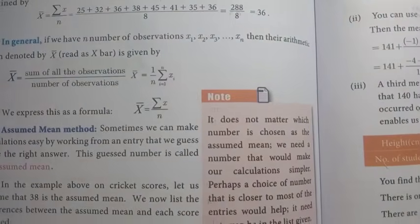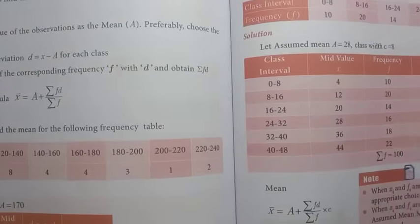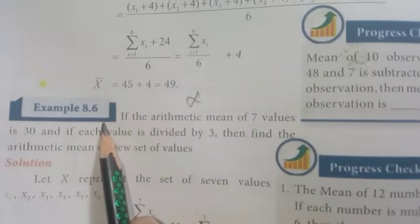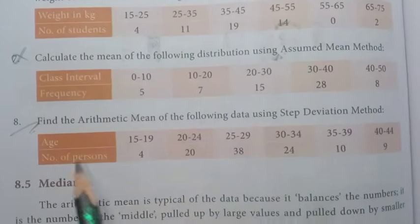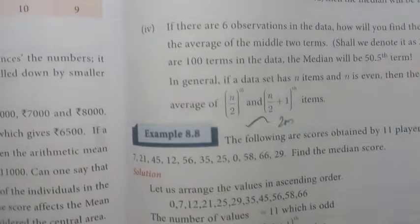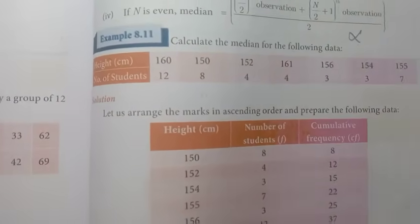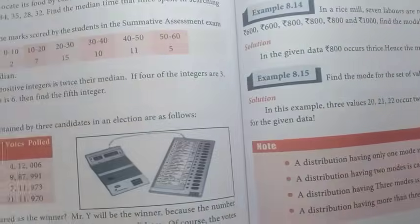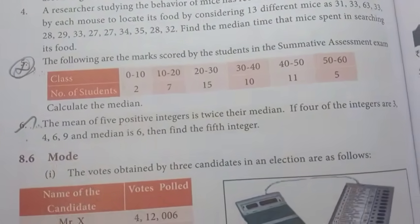Chapter 8: Statistics. Page number 273, Example 8.1 — important. Next Example 8.3. Page number 276, Example 8.4. Then Example 8.6. Page 277, Example 8.7. Exercise 8.1: 1st and 2nd important. Then 5th, 6th, 7th. Step deviation method, next page number 279, Example 8.8. Then Example 8.9. Page number 281, Example 8.11 — important. Page number 283, Example 8.13. Previous year annual exam — Example 8.12. Exercise 8.2: 1st and 3rd important, 5th and 6th important.